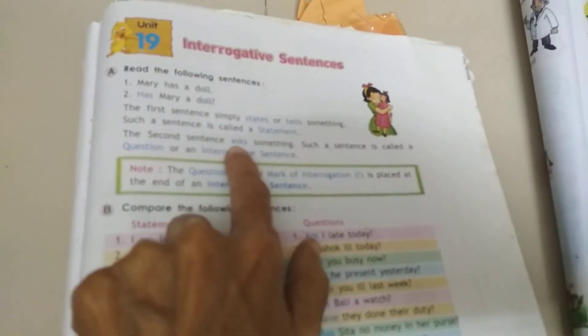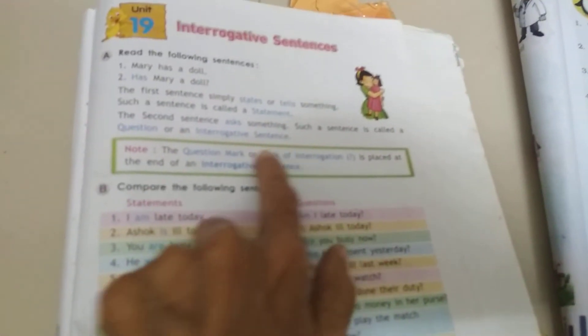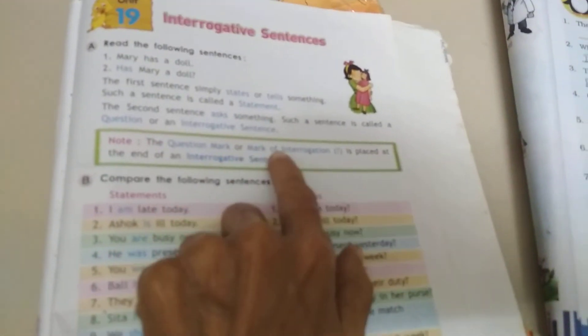Such a sentence is called a question or an interrogative sentence. The question mark or mark of interrogation is placed at the end of interrogative sentence.